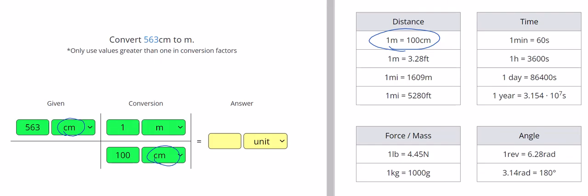Note that the directions say they only use values greater than one. So use those ones that are in the reference sheet. If I multiply across the top, I'm going to put in 563 times one divided by 100, or just 563 divided by 100, which gives me 5.63. For the units, the centimeters canceled out, and I was just left with meters. So I am putting in my answer here as meters.